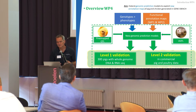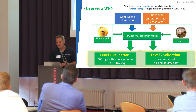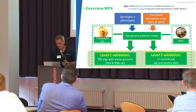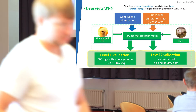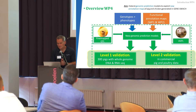We have two levels of validation. Level one is an experiment where we have 300 pigs with tissue samples for gene expression but also DNA for whole genome sequencing, so we have whole genome sequence SNP data on those 300 pigs. Level two involves a commercial pig population and also a commercial poultry population — we are mostly involved in the pig population. There is a link between the two levels, as the 300 pigs in level one are part of the dataset in level two.